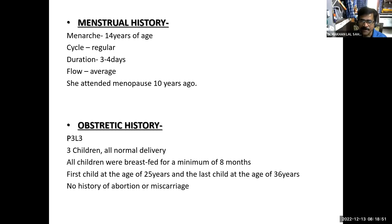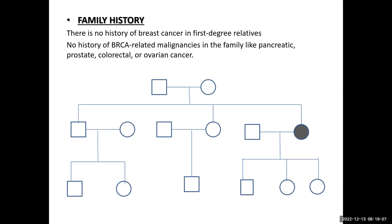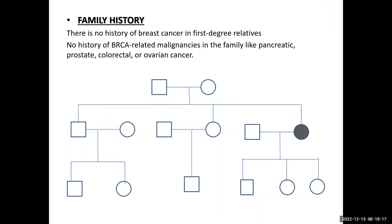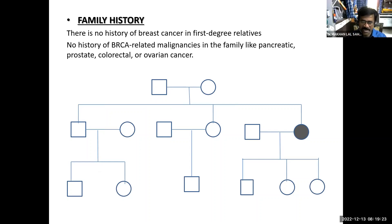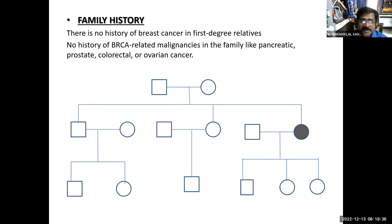Regarding family history: this patient falls into the sporadic breast cancer group. Sporadic breast cancer is the most common type, accounting for 60–70% of all breast cancers. The pedigree chart confirms this patient as the index case with no other family members affected by any related malignancy.